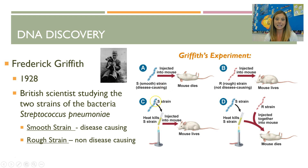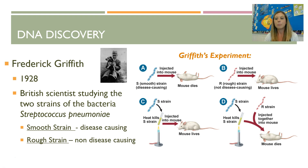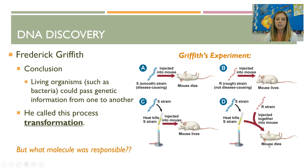He thought, what if I heat-kill the S strain and then inject that into the mouse? He found that the mice live. Then he said, what if I heat-kill the smooth disease-causing strain and then add the non-disease-causing strain to it? You would think the mice would live, but the mouse died. His conclusion was that living organisms such as bacteria can pass genetic information from one to another, and he called this transformation.